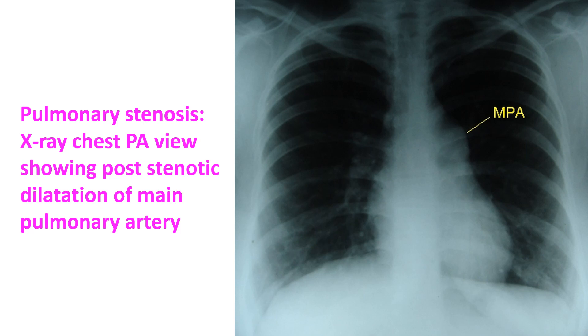This contrasts the X-ray finding in PS from that in pulmonary hypertension, where both the left and right pulmonary arteries as well as the main pulmonary artery are dilated.